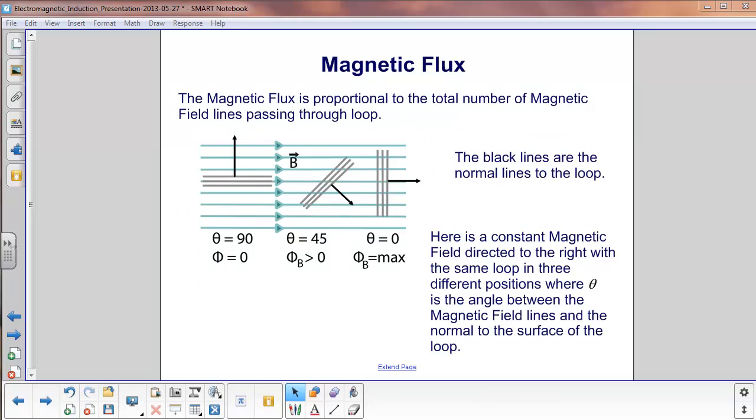The magnetic flux is proportional to the total number of magnetic field lines passing through the loop. We've already talked about the limiting cases, where the magnetic field is perpendicular to the normal and where it's parallel. The next two slides are going to cover what happens in the intermediate area when it's neither 90 or zero.